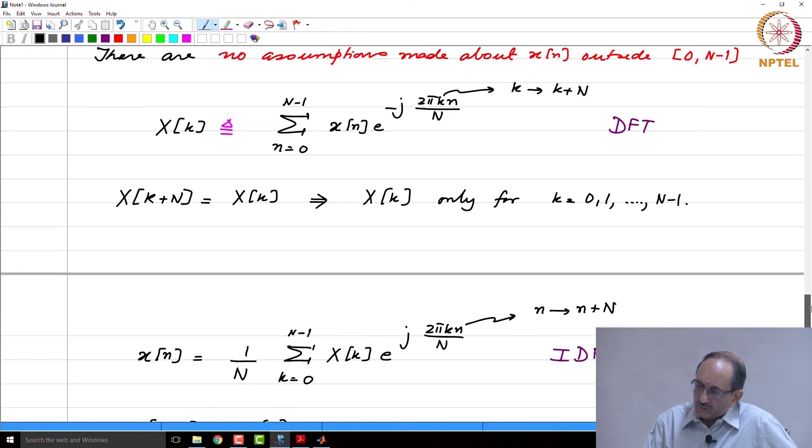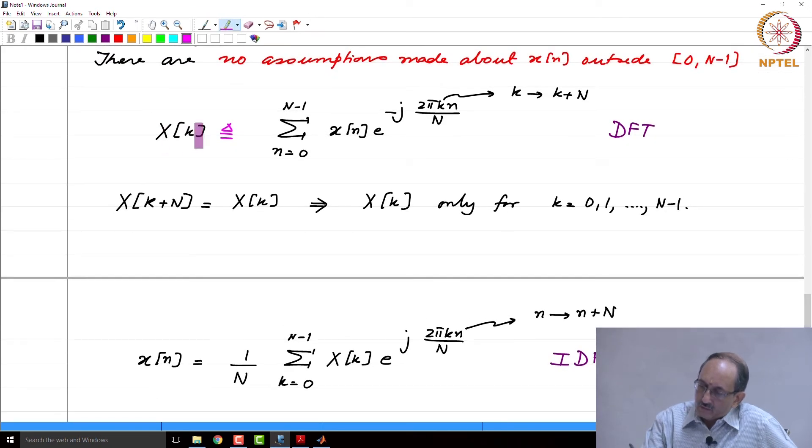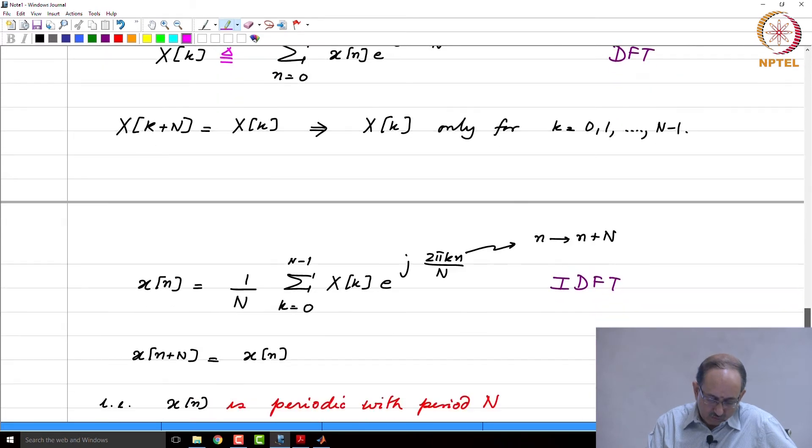By the way, X(k) is called as the kth DFT coefficient. And sometimes, this is also called as the kth bin. Kth coefficient or kth bin. So k is also called as the bin index, standard term used in the literature.